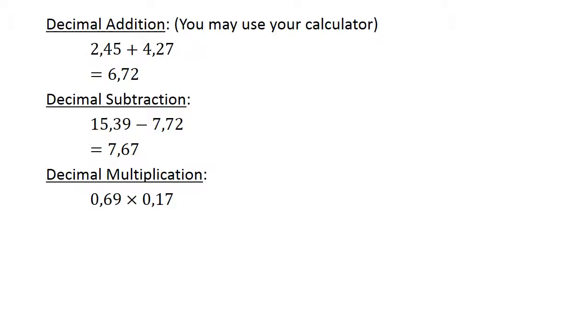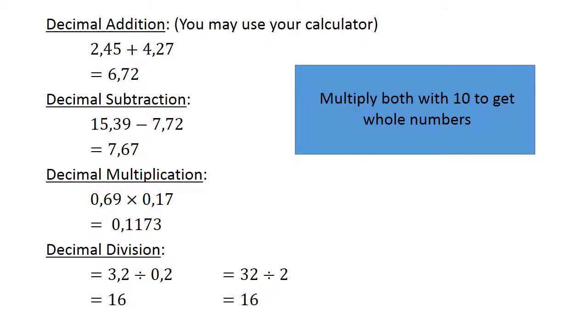Decimal multiplication. 0.69 times 0.17 equals 0.1173. Decimal division. 3.2 divided by 0.2. We multiply both by 10 to get whole numbers, equals 16.